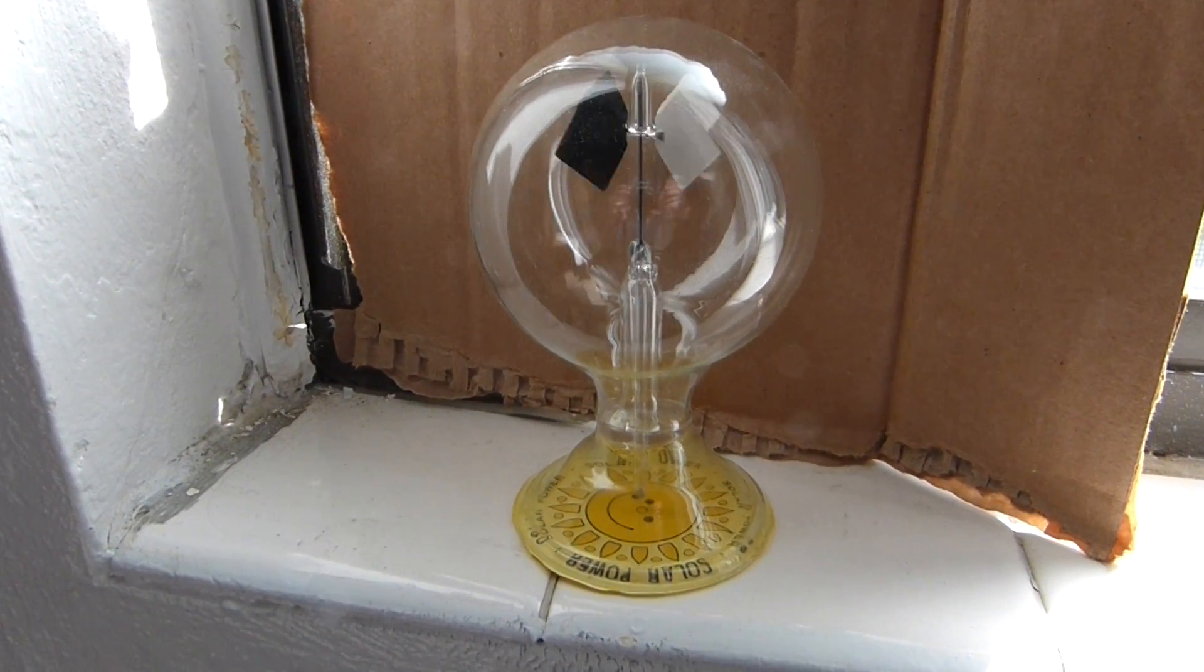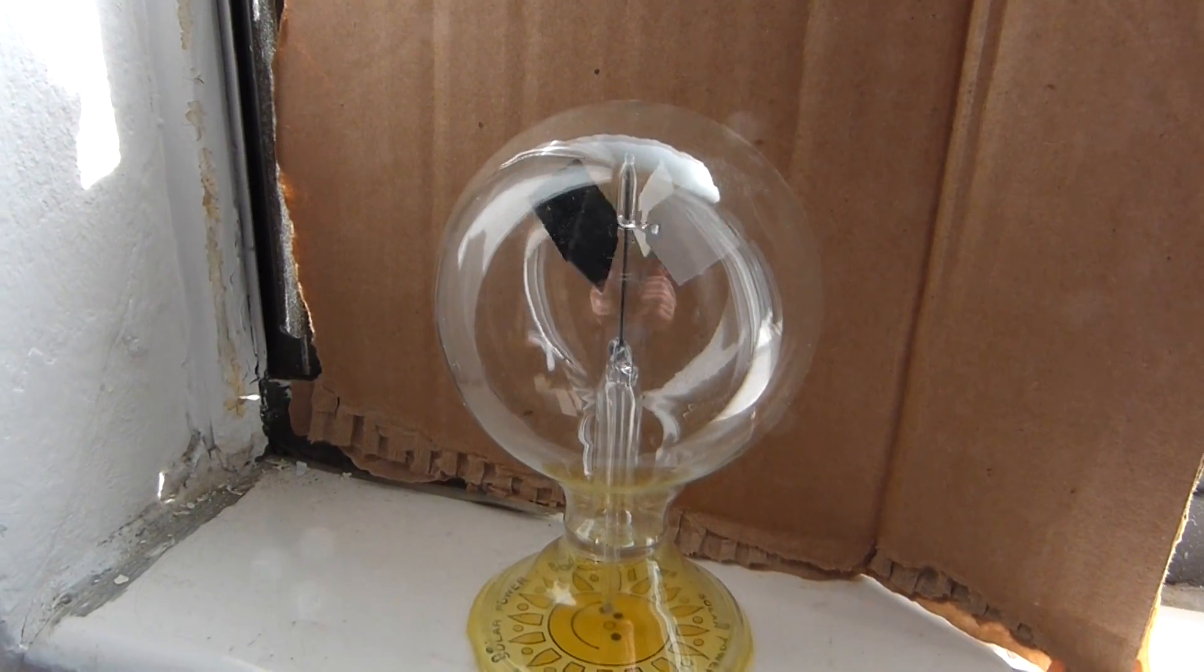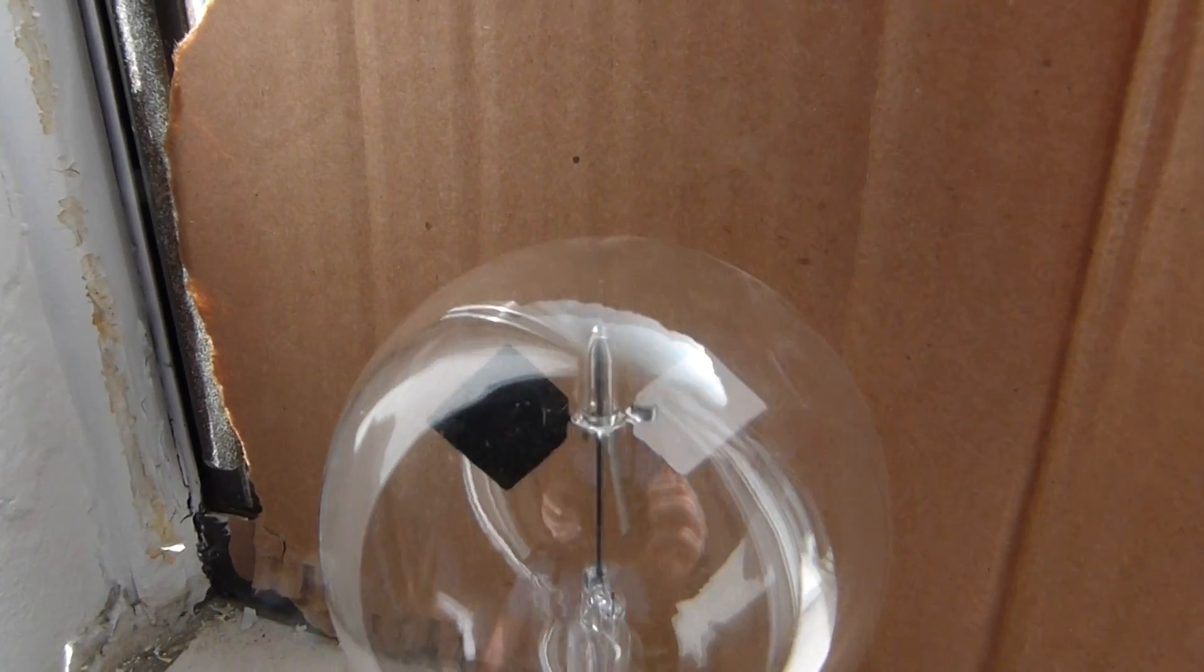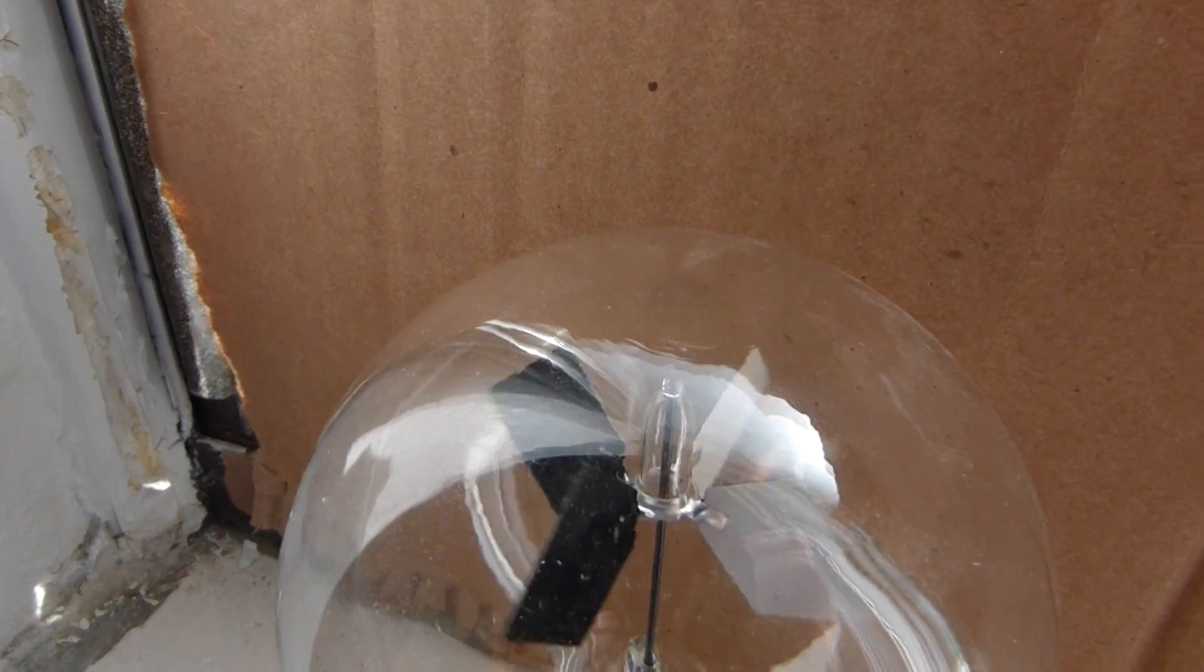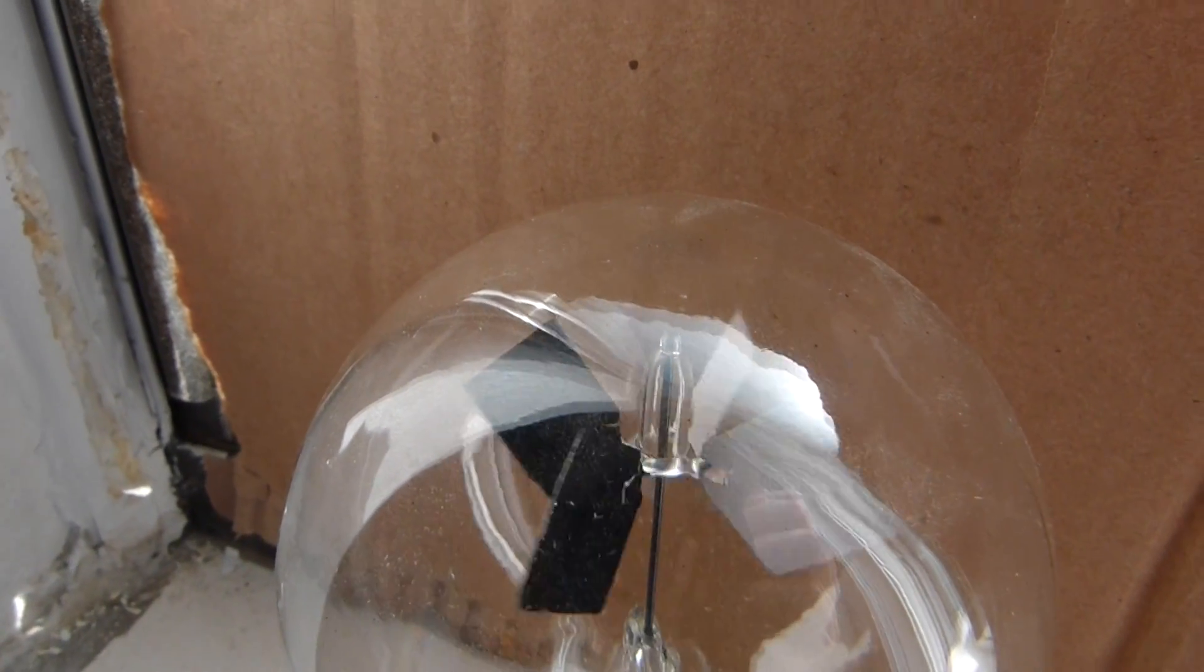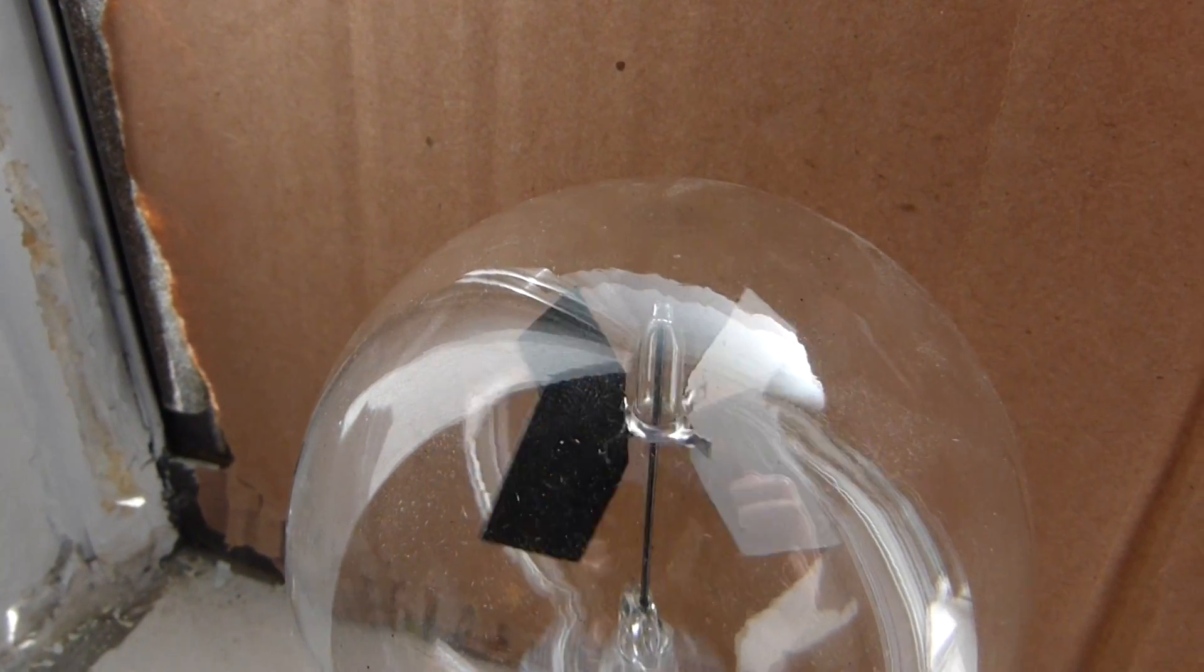Here's an interesting little solar powered novelty. It's called a Crux Radiometer. It has four square metal plates that are painted black on one side and white on the other.